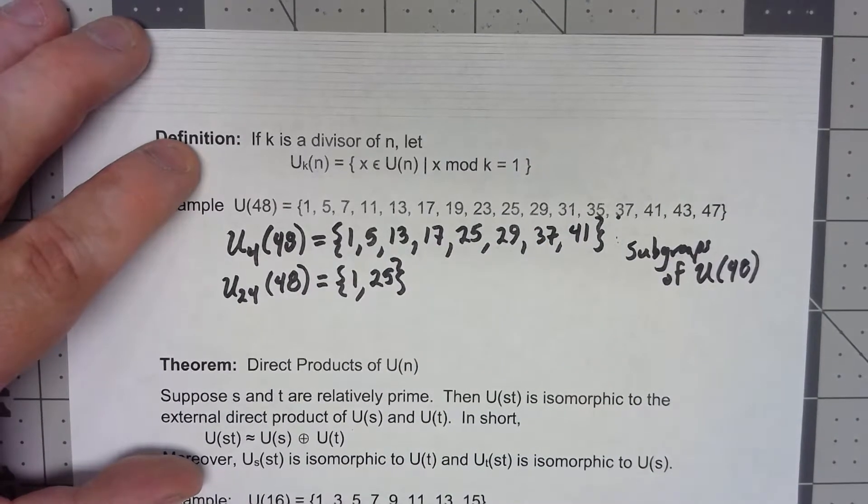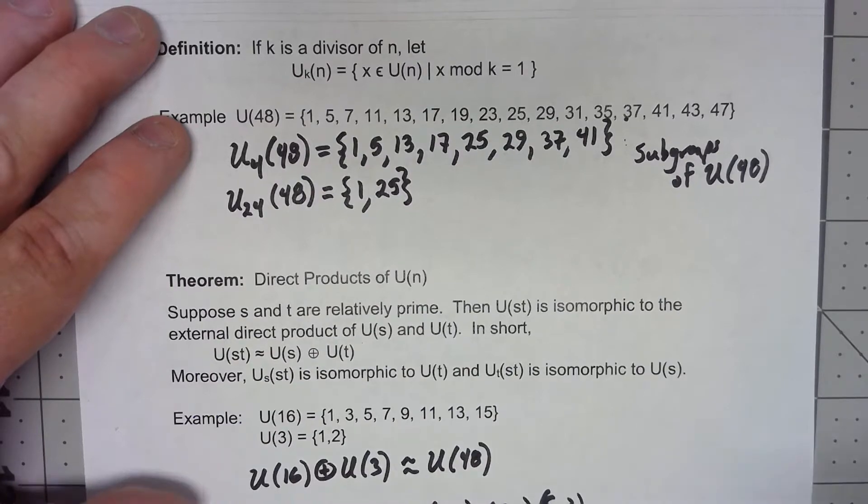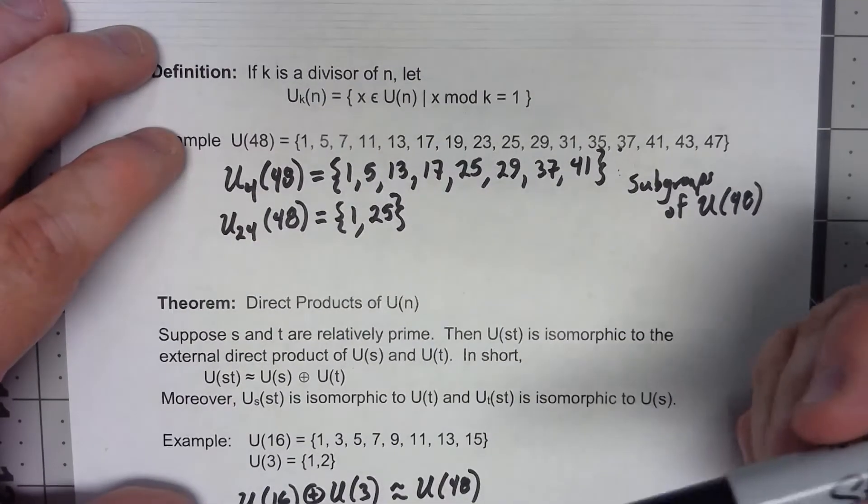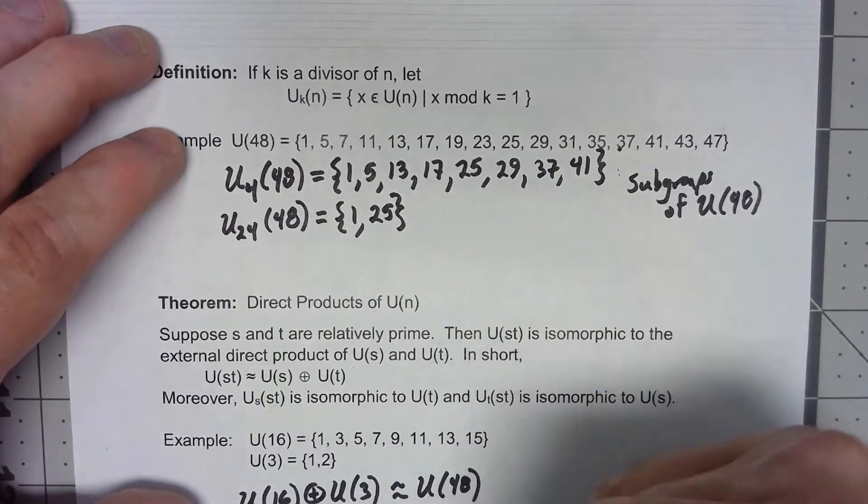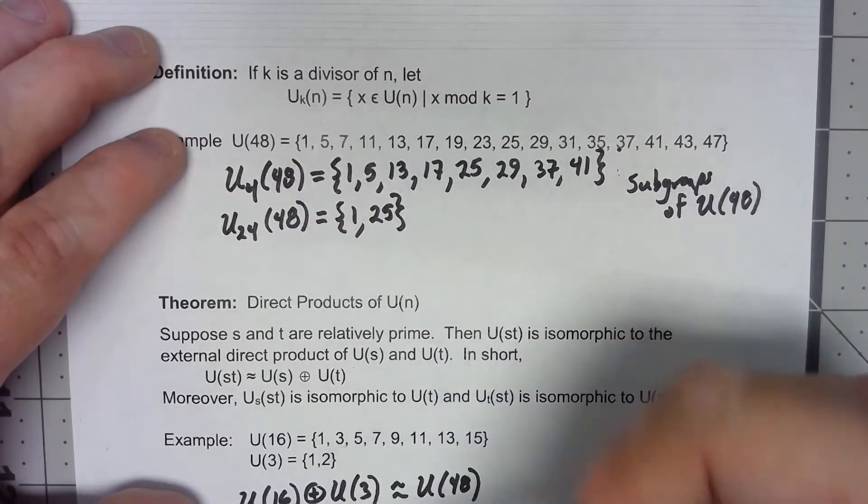So we're going to claim that this is isomorphic to U(3). That's actually since there's only two elements it's really easy to show. Certainly the identity has to map to the identity and then the other element is its own inverse so they're definitely isomorphic.